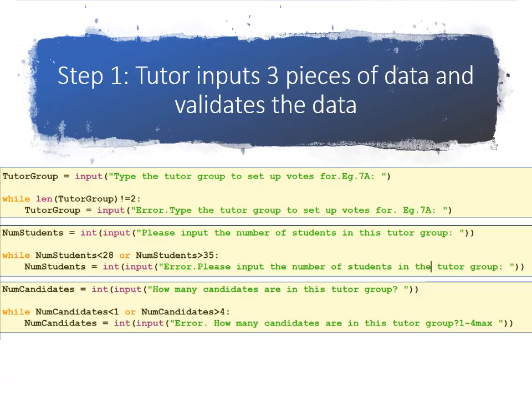So in step one, we're going to start off by inputting three important pieces of data and validating them. So first, the tutor group is equal to input the tutor group. And I'm going to be using a length check for validation. So while the length of the tutor group input is not equal to two, error. It has to be two characters, for example, 7A, 8G, etc.